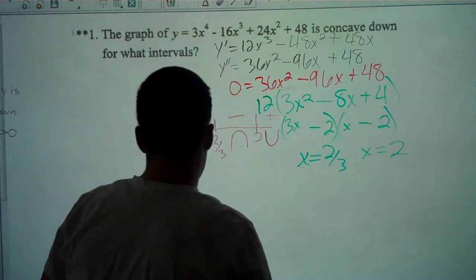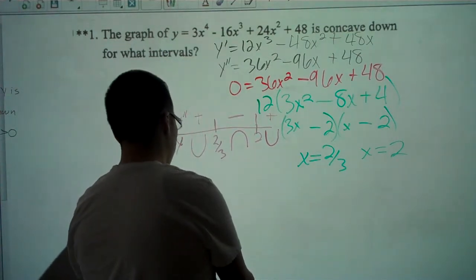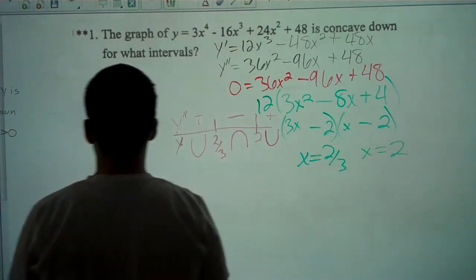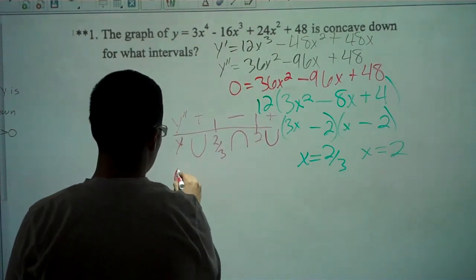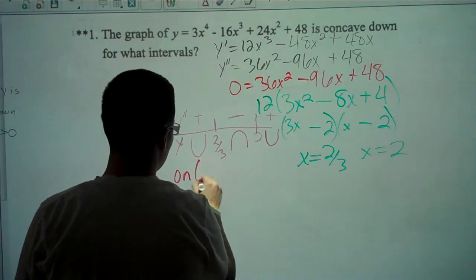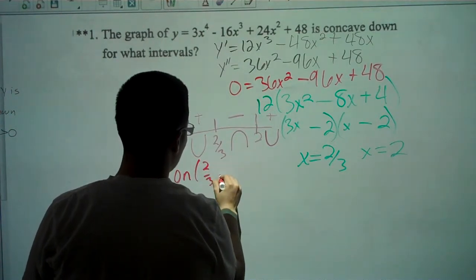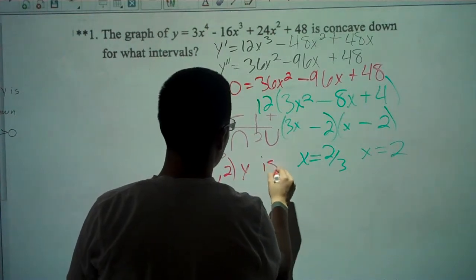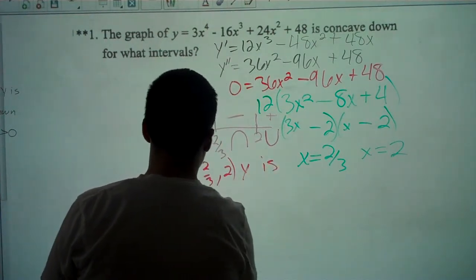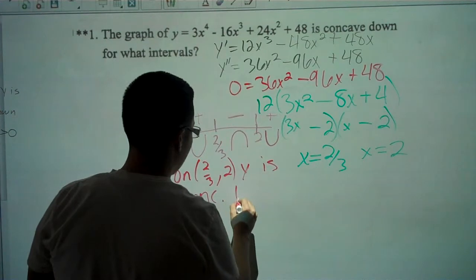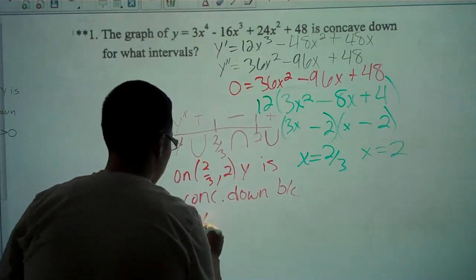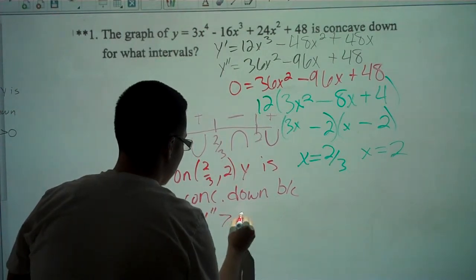So we can see where the point of inflection is happening, between 2 thirds and 2. We're going to say on the interval between 2 thirds and 2, y is concave down because y double prime is less than zero.